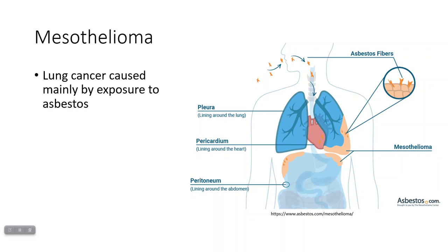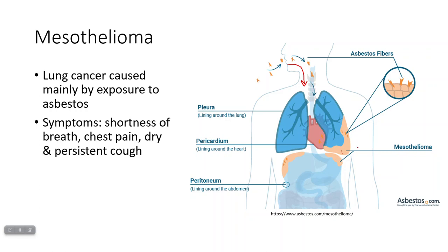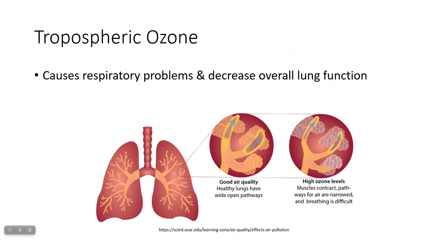Mesothelioma is a particularly aggressive type of lung cancer, and it's associated mostly with exposure to asbestos. About 8 out of 10 cases of mesothelioma are in people who have been exposed to asbestos. Asbestos fibers are small and can be carried in the air very easily, getting into the lungs while you breathe. They irritate and can cause mutations in the cells, leading to mesothelioma. Symptoms include shortness of breath, chest pain, and a persistent cough. Unfortunately, by the time it's caught, it's already pretty advanced and very hard to treat.